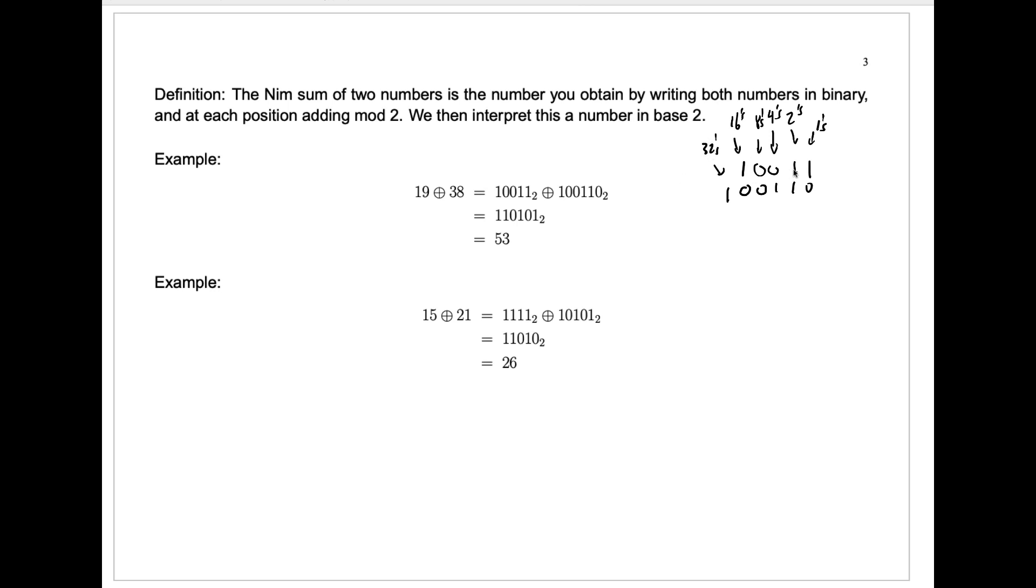So 19 is 16 plus 2 plus 1. That's 19. These are all numbers in base 2. 38 is a 32, plus 4, plus 2. So it has the binary representation 1, 0, 0, 1, 1, 0. Now we can add each column mod 2. We look at the number of 1's here, and if it's odd, we get a 1. Here we have two 1's, so we get a 0. Here we have a single 1. Here we have no 1's. Here we have a single 1, so we get a 1. And here we have a single 1, so we get a 1.